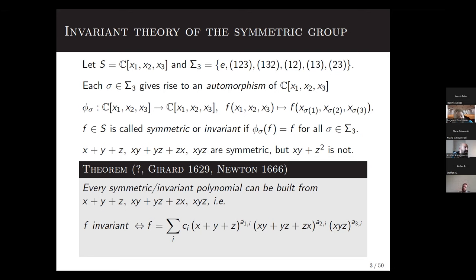Whereas the polynomial x(y + z)² is not invariant, because if I interchange x with z and leave y unaffected, I get zy + x², which is clearly not the same. A classical theorem — dating back to Newton in some form — states that every symmetric polynomial can be built from these three: x+y+z, xy+yz+zx, and xyz. Invariant polynomials can be written as polynomial expressions in terms of these.